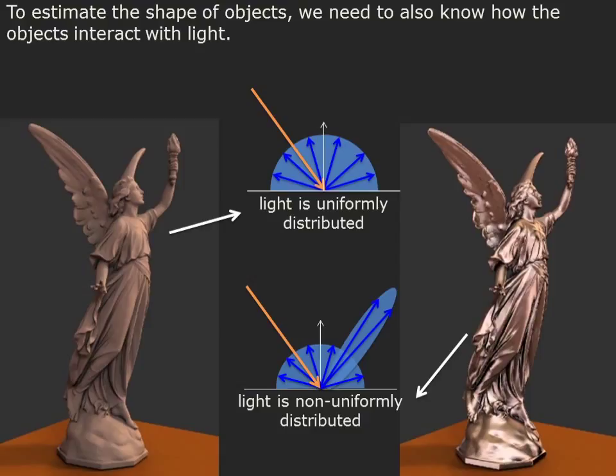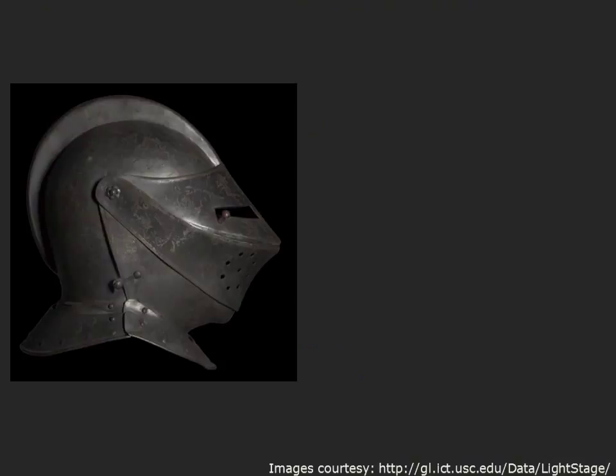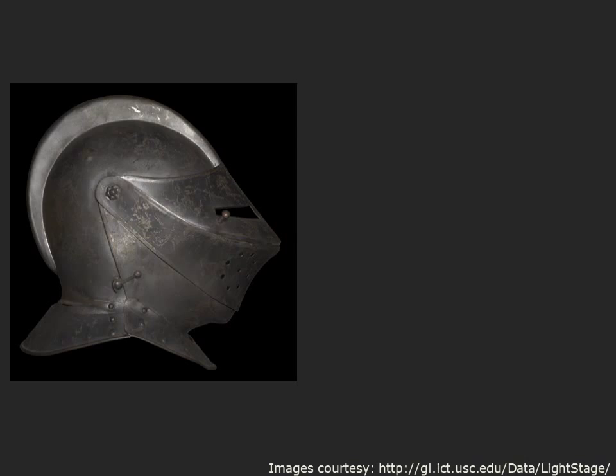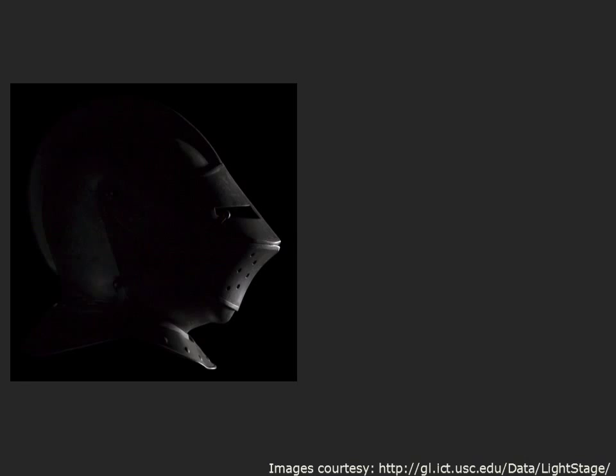If we notice these differences, then we can account for the differences in appearance in a meaningful way. To recover both the shape and the nature of interaction with light, we take multiple images of an object by varying its lighting. This procedure is called photometric stereo.